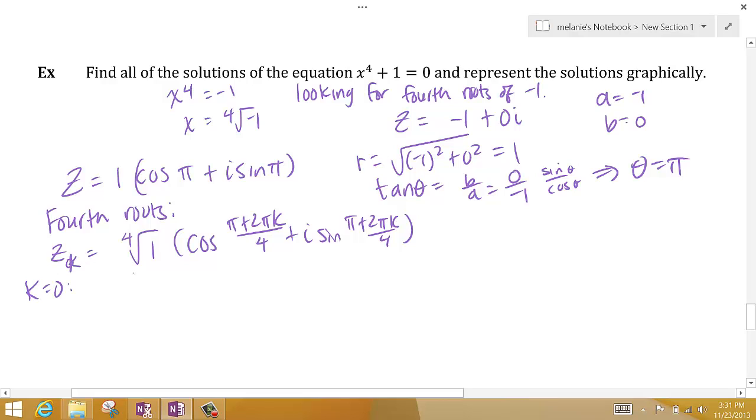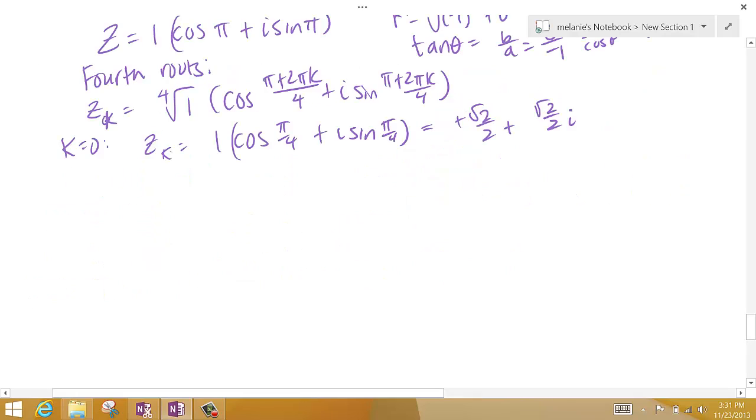So when k is 0, I get 1 cosine—if I plug a 0 in here, I get pi over 4 plus i sine pi over 4. And we know what that is. Cosine of pi over 4 is positive root 2 over 2. And sine of pi over 4 is root 2 over 2. This should say z sub 0.